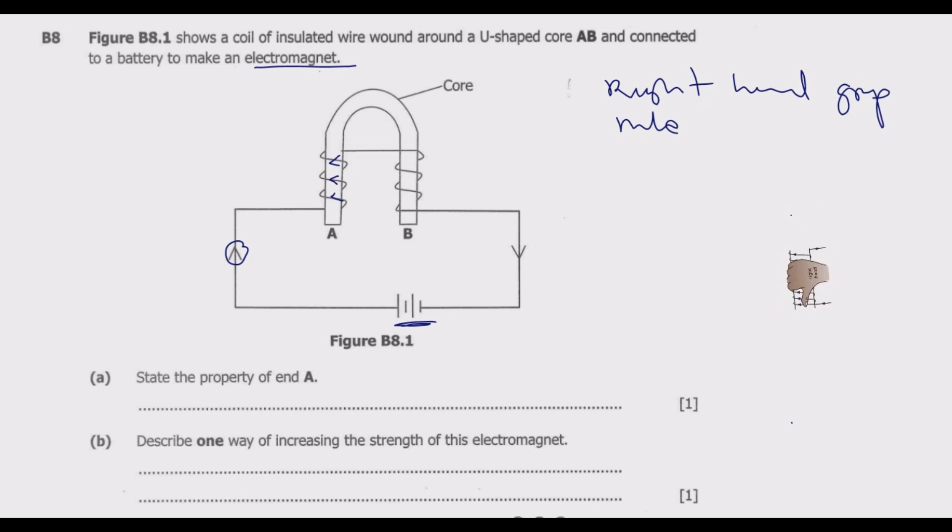What we know is the direction of the thumb is in the north. Now we know the direction of the current, you see the way I've indicated there. What you do is you need to hold this using the grip thumb rule. So you grip it like that.